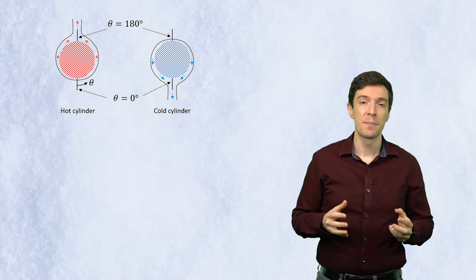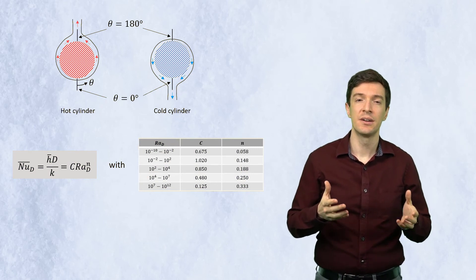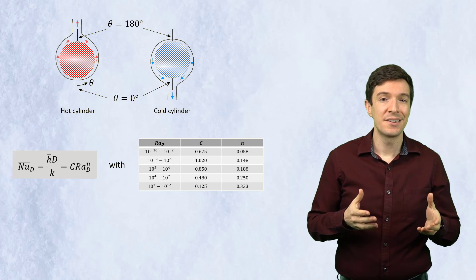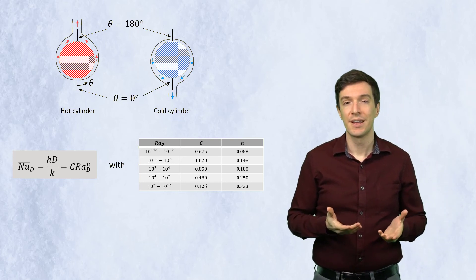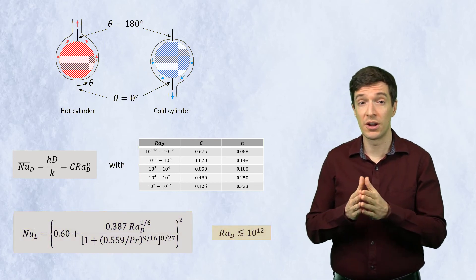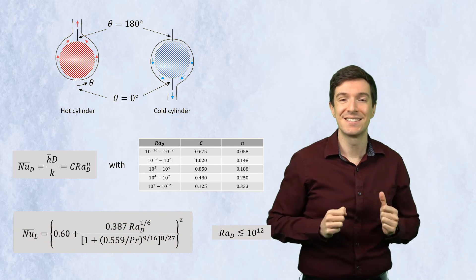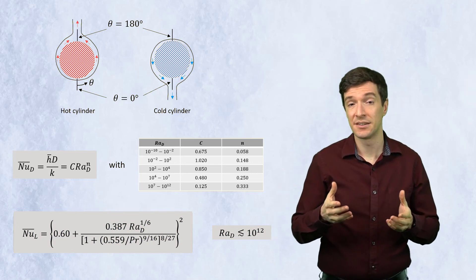These correlations provide us the average Nusselt number along the cylinder circumference, in this case, either using different combinations of coefficients, or as a single formula over a large range of Rayleigh numbers. In this case, the characteristic length is the cylinder diameter.